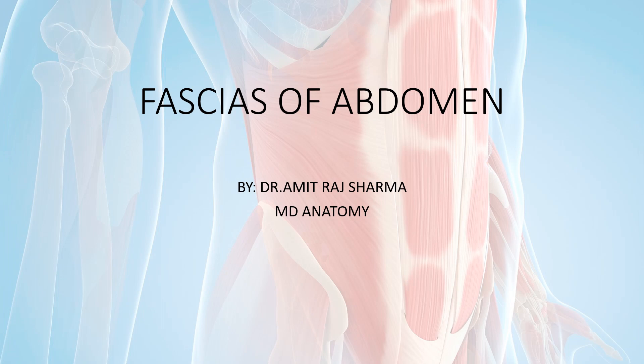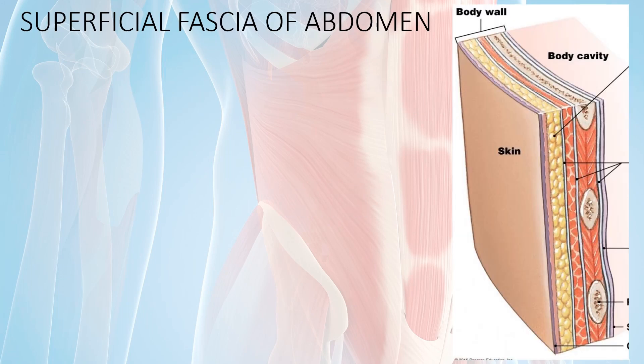Hello students, in this video we will discuss the fascias of abdomen. This is the continuation of the anterior abdominal wall. In the body we have skin — epidermis, dermis, then hypodermis — and below the skin we have fascia.